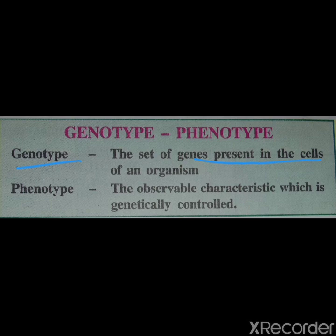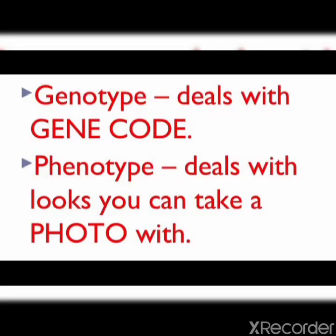Genotype is the set of genes present in the cells of an organism. Phenotype is the observable characteristics which are genetically controlled. There is one trick to remember the difference: genotype deals with gene code — G for genotype, G for gene. Phenotype deals with looks — you can take a photo, P for phenotype, P for photo.